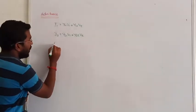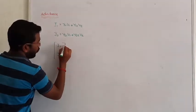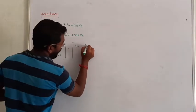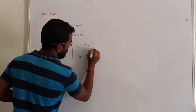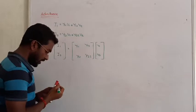In matrix form: [i1, i2] equals the admittance parameters matrix [y11, y12; y21, y22] multiplied by voltages [v1, v2].